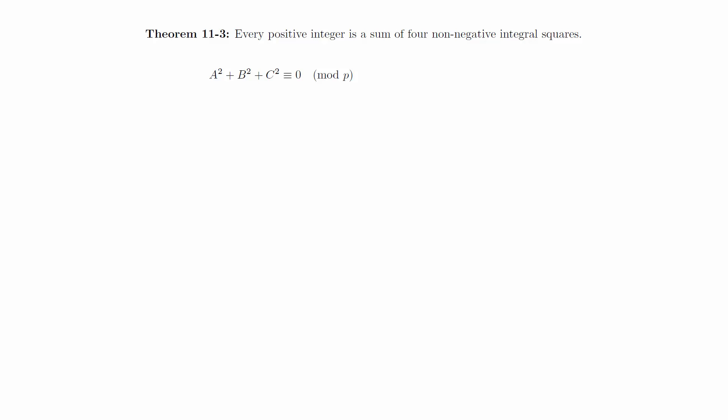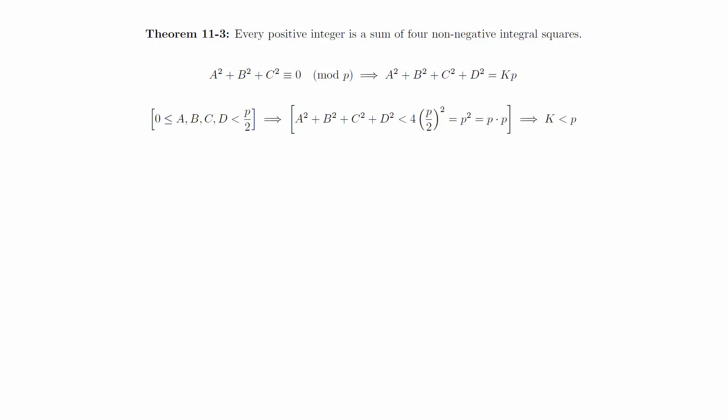By the previous theorem, for any prime p, there exist integers a, b, and c, not all zero, such that a squared plus b squared plus c squared is congruent to zero modulo p. This means that we can solve an equation of the form a squared plus b squared plus c squared plus d squared is equal to capital K times p, for some capital K greater than or equal to one, by taking d equal to zero. Notice that if K is equal to one, we're done with the proof. We can pick a, b, c, and d to be between zero and p over two by taking them to be the absolute value of their least residue modulo p. Therefore, the sum of these four squares can be taken to be less than p squared, which shows that we can take capital K to be less than p.